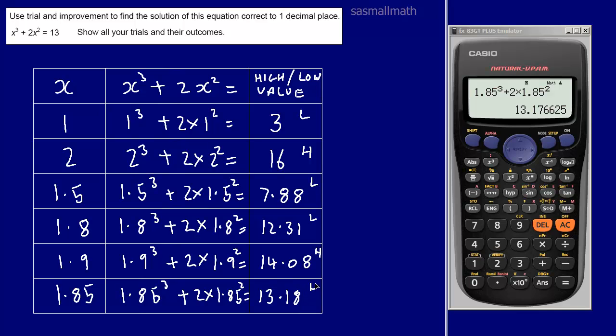And that's slightly high. So we know our answer must be between 1.85 because it's high and the 1.8 which is low. So to one decimal place it's closest to 1.8. So that's our answer: x equals 1.8 to one decimal place.